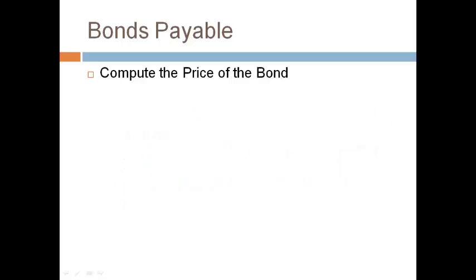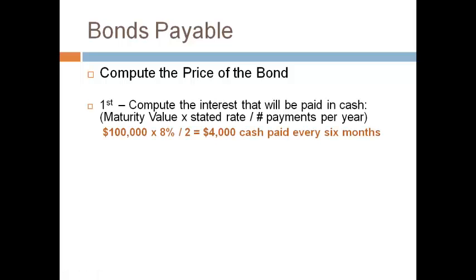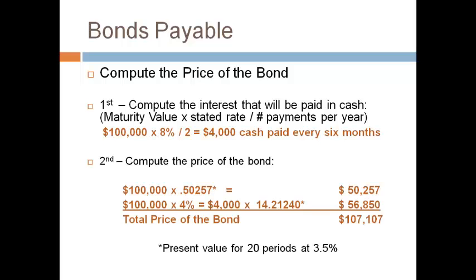The first thing that must be done is compute the price of the bond. The price is not given in the example, so we will have to compute the present value of cash flows. The cash payment for interest is computed as the maturity value times the stated rate divided by the number of payments per year — $4,000 must be paid every 6 months. Use present value tables to locate the present value factors. The number of total periods is 20, and the interest rate for 6 months is 3.5%. The price of the bond is $107,107 on January 1st.